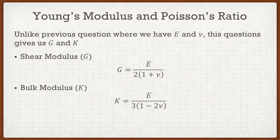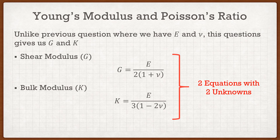For the bulk modulus, the formula for K is similarly a function of both E and ν: K = E / [3(1 − 2ν)]. Now these look simple individually, but if we take a step back we can see we have two equations with two unknowns. We know G, we know K, and our only unknowns are E and ν. So we can set up a system of equations and solve for both E and ν — that's going to be the first part of this question.